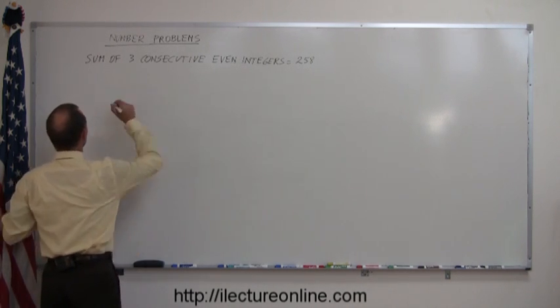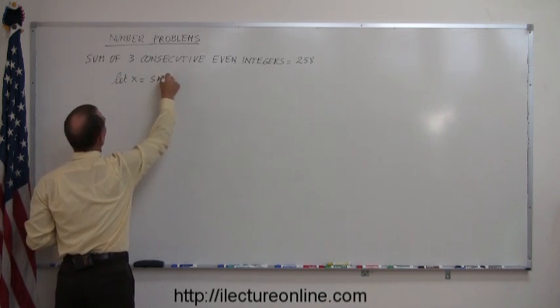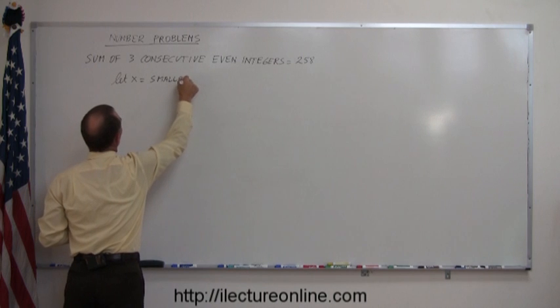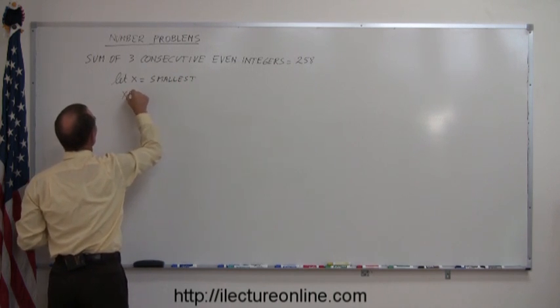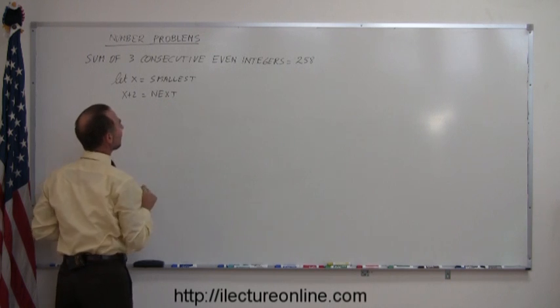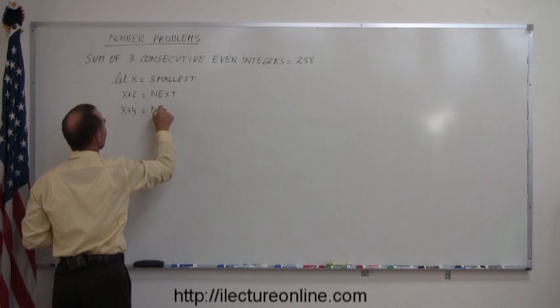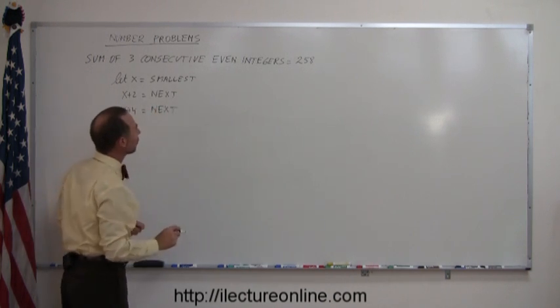So if we're going to let x equal the smallest, then x plus 2 must equal the next even integer and then x plus 4 must equal the next even integer again.